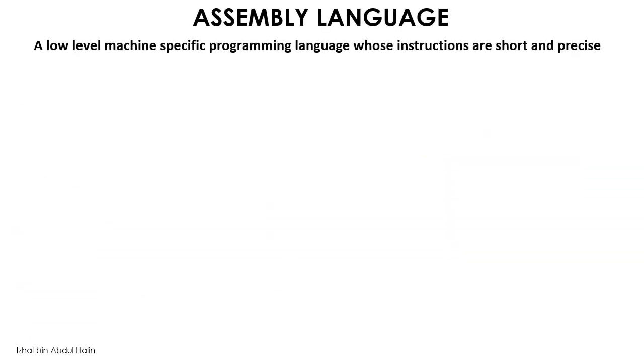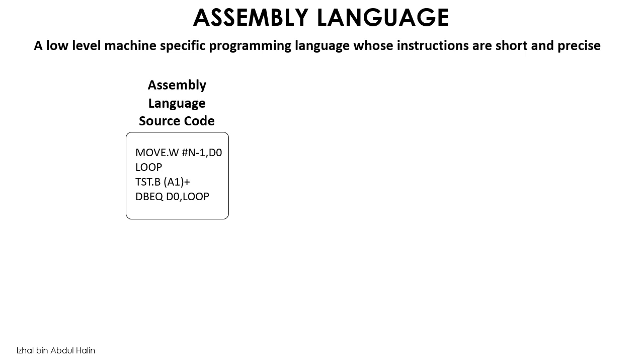Finally, an explanation on how the 68K microprocessor is programmed is presented here. Programs for the 68K is written in a low-level language called assembly language. Unlike high-level languages, its instructions are short, simple, and precise. Take a look at this short assembly language program. Look at the first instruction, it reads move.w, n-1 d0. This means to move a word of data to register d0. We will study a lot of instructions in future videos. It will be fun.